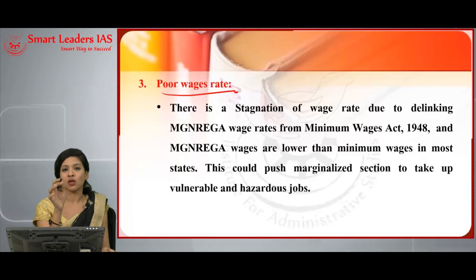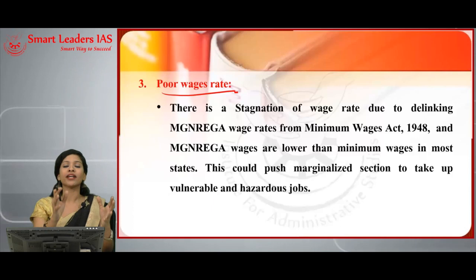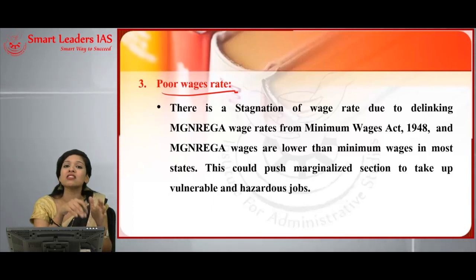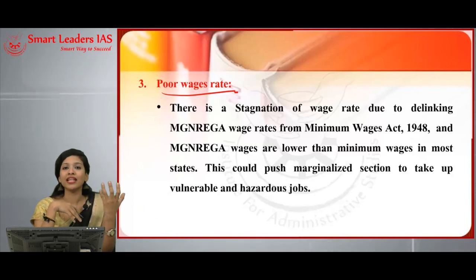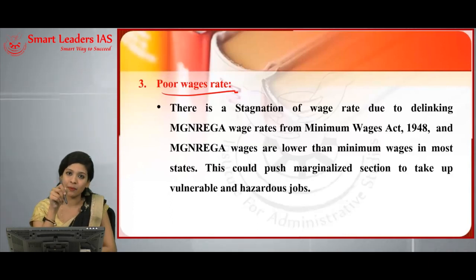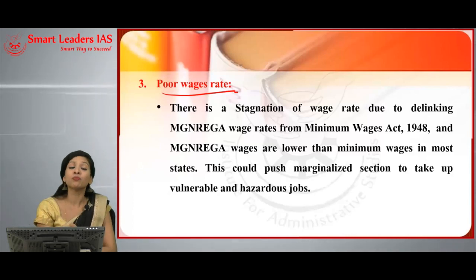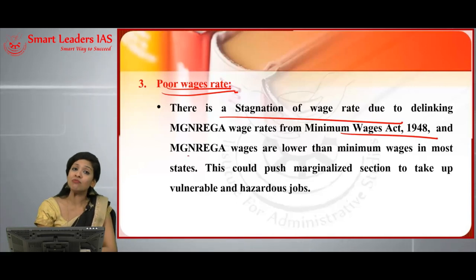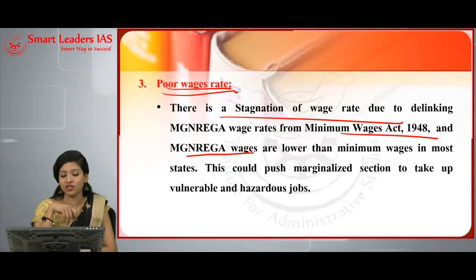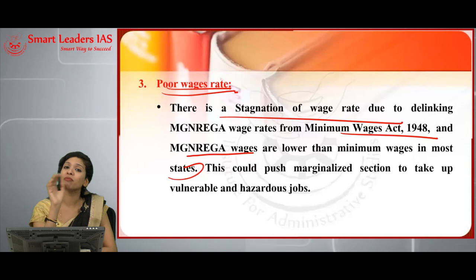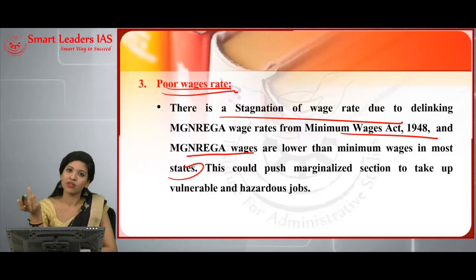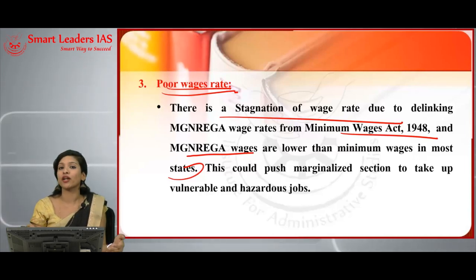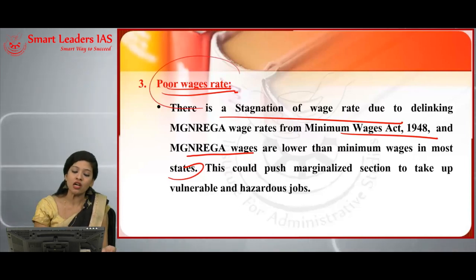The next challenge: poor wage rates. MGNREGA was started to ensure people are provided at least a minimum wage rate so they can maintain a decent standard of living and come out of poverty. But in reality, there is a stagnation of wage rates due to declining MGNREGA wage rates from the Minimum Wages Act of 1948. MGNREGA wages are in fact much lower than minimum wages in most states. When income remains low, the purchasing power of people decreases, the standard of living decreases, and people remain trapped in poverty — even when employed.